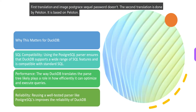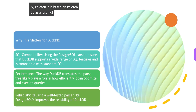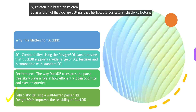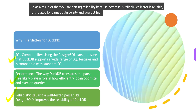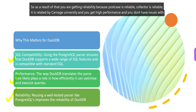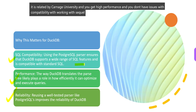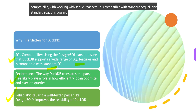As a result, you are getting reliability because PostgreSQL is reliable and Peloton is reliable, developed by Carnegie Mellon University. You get high performance and no issues with compatibility when working with SQL features — it is compatible with standard SQL.